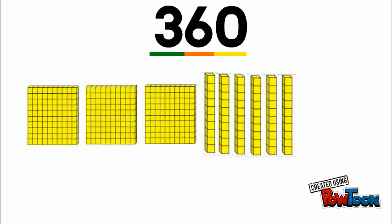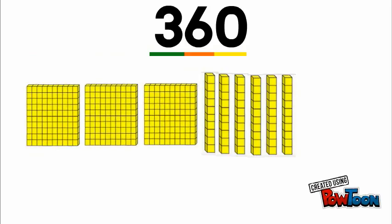My tens place has a six, so I'm gonna put six rods—that represents six tens. And then I have a three in the hundreds place, so I put three flats for three hundreds. So let's write our addition sentence.